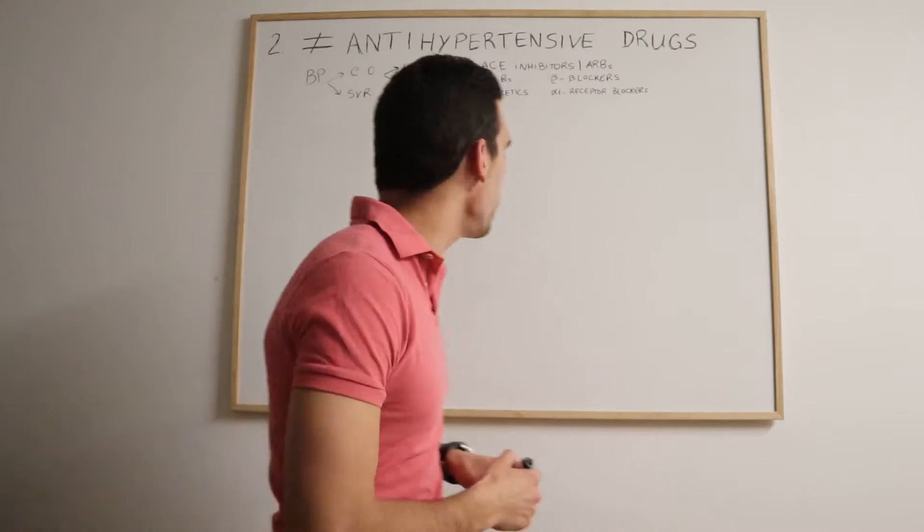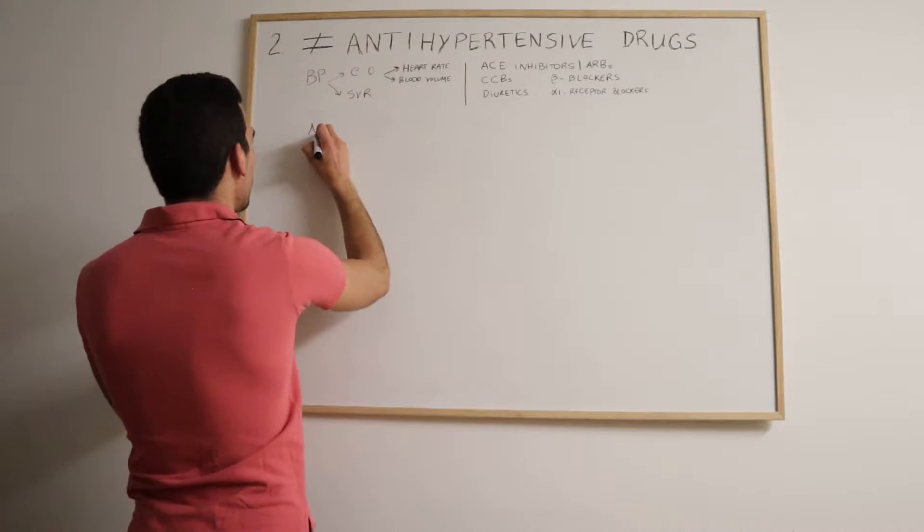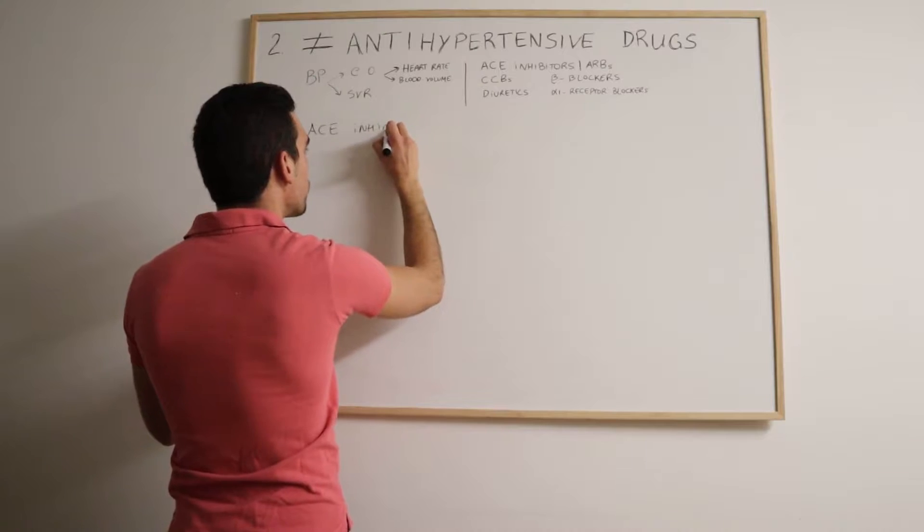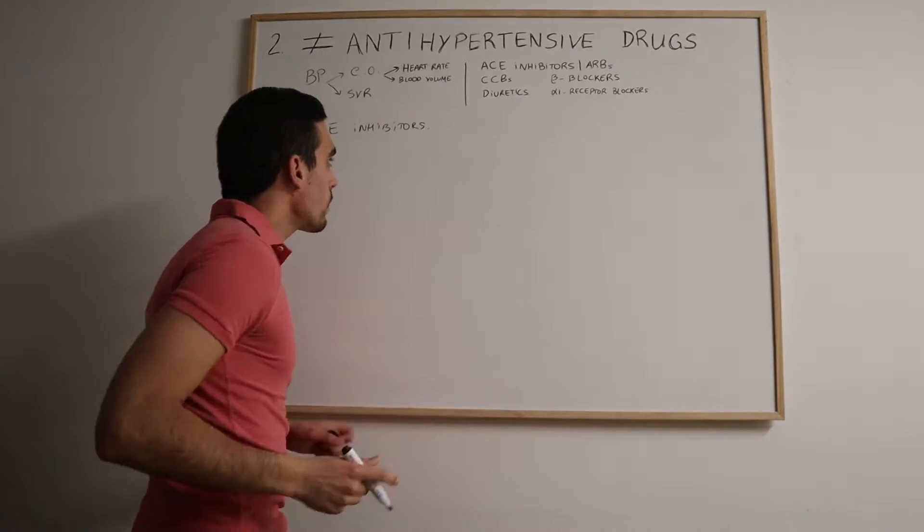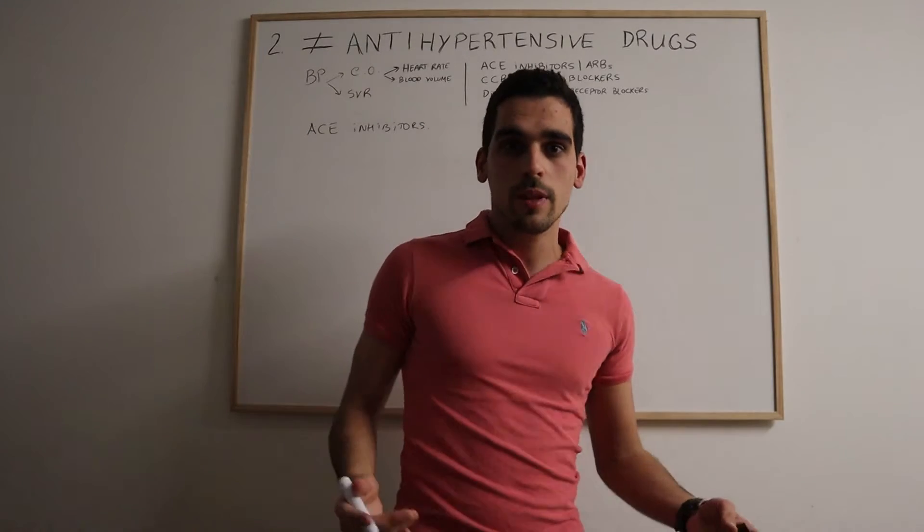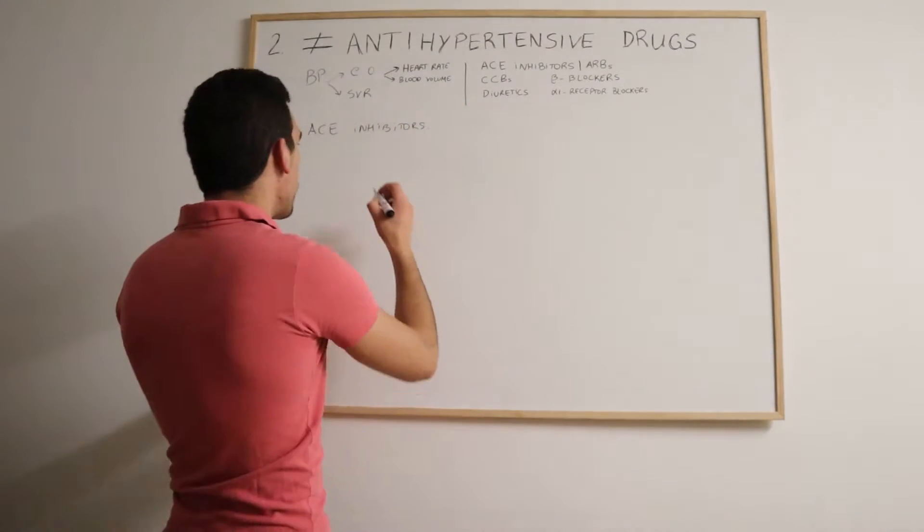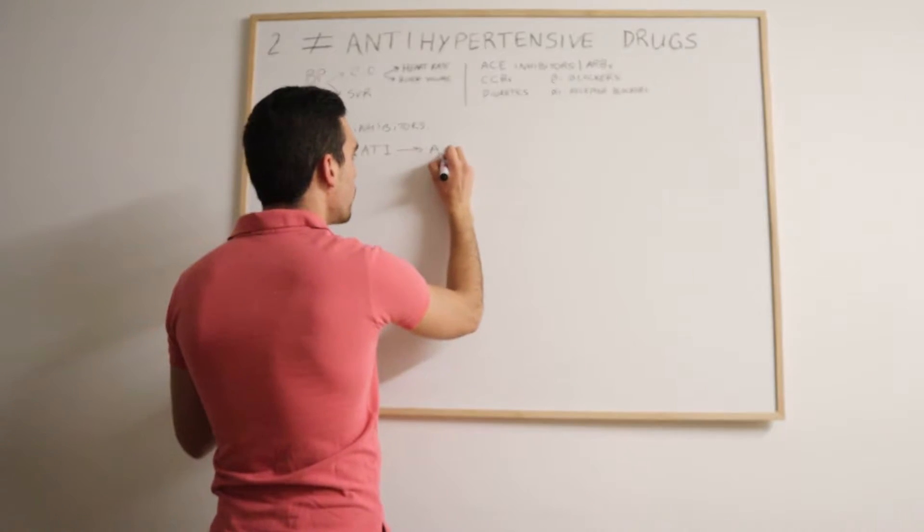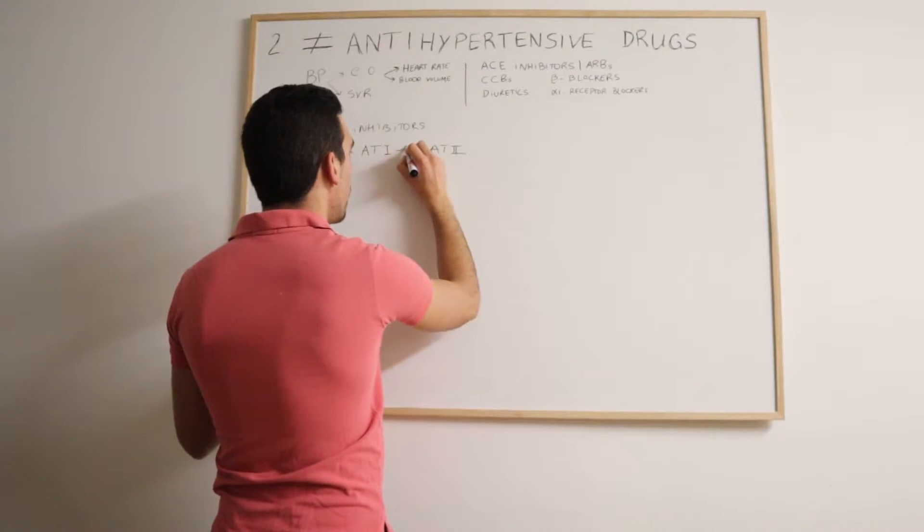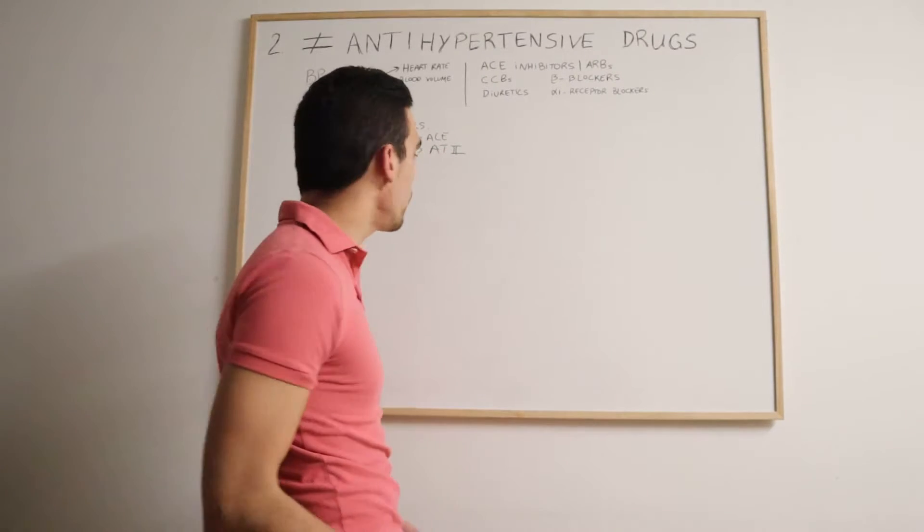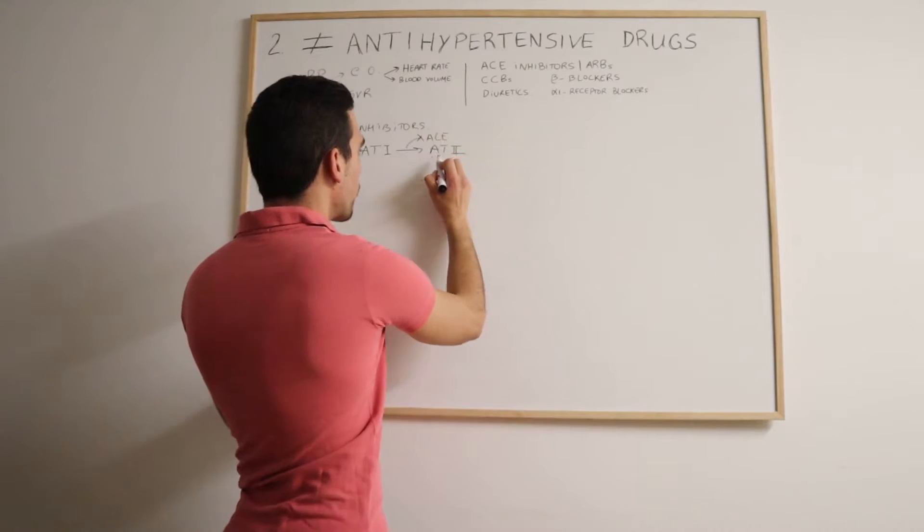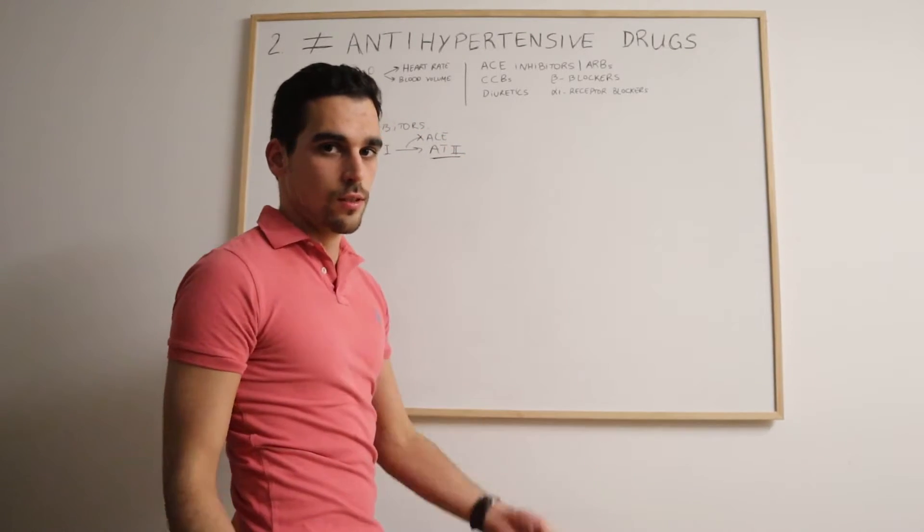Let's start with ACE inhibitors. Basically the ACE inhibitors act by blocking the transformation of angiotensin 1 into angiotensin 2. There is an enzyme responsible for this process which is the ACE enzyme, angiotensin converting enzyme, and it will block the formation of angiotensin 2.